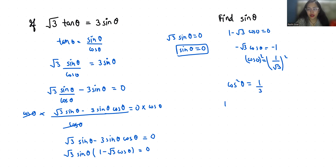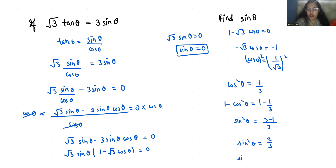Now if I subtract 1 from both sides, 1 minus cos squared theta equals 1 minus 1 by 3. According to the identity, 1 minus cos squared theta equals sin squared theta, and this equals 3 minus 1 by 3. So sin squared theta equals 2 by 3, and sin theta equals root of 2 by 3. So the possible values of sin theta in this case are: sin theta can be 0 and sin theta can be root 2 by 3.